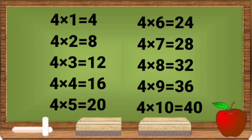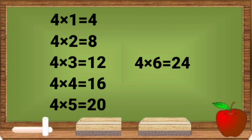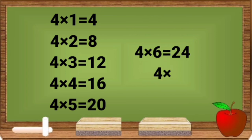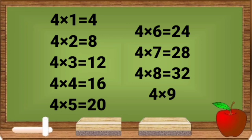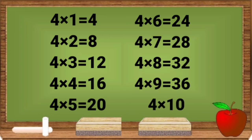4 sixes are 24. 4 sevens are 28. 4 eights are 32. 4 nines are 36. 4 tens are 40.